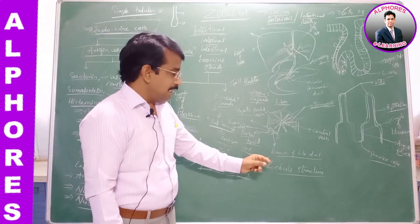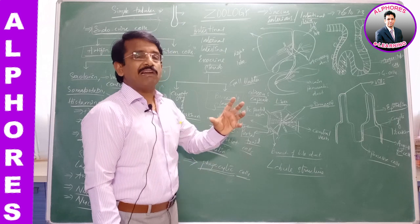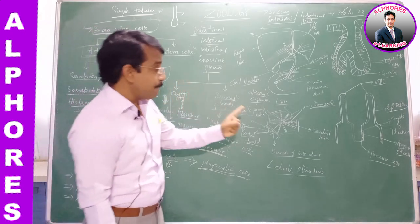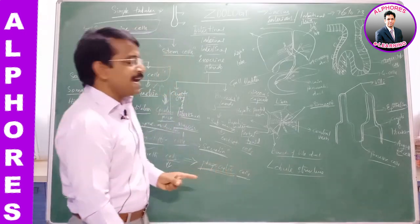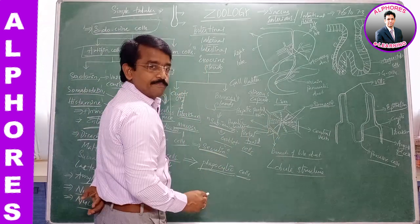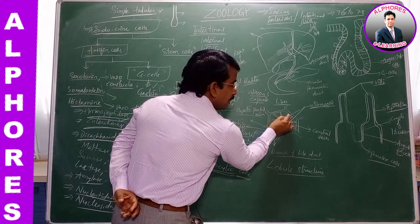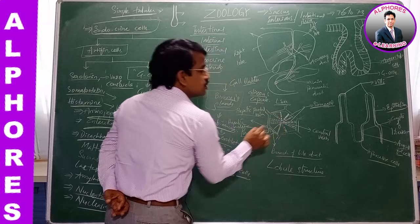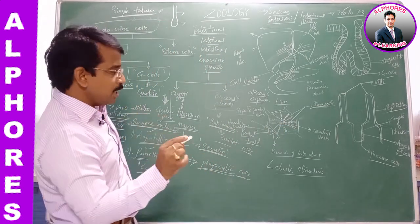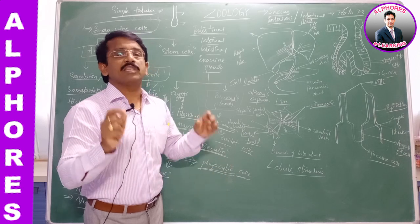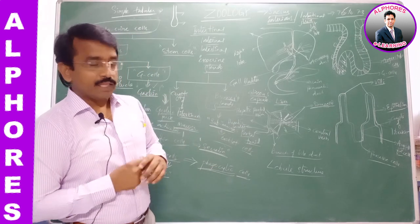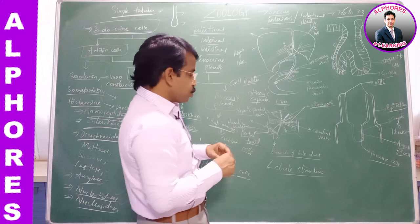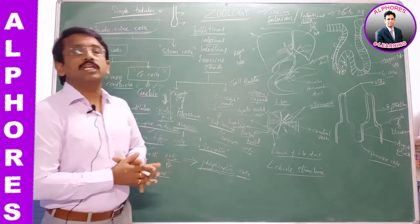The hepatic lobules contain hepatic cells named hepatocytes. These hepatocytes are arranged in a radial fashion — look at the diagram where you can find the radial row arrangement of the hepatocytes in each hepatic lobule. This radial row arrangement of hepatocytes is named the hepatic cords. These hepatocytes secrete bile juice.